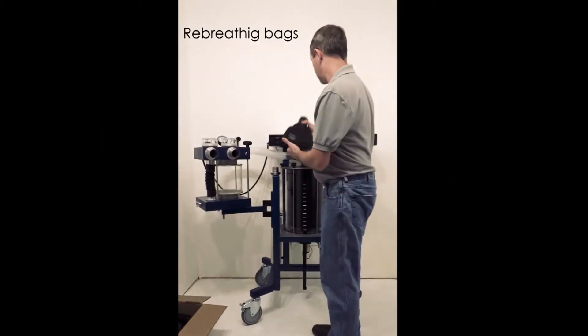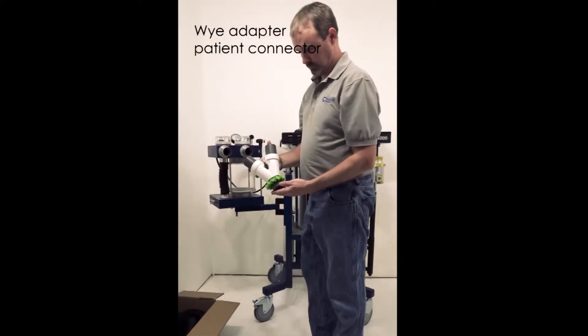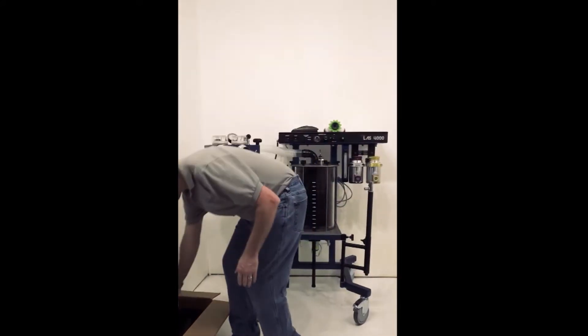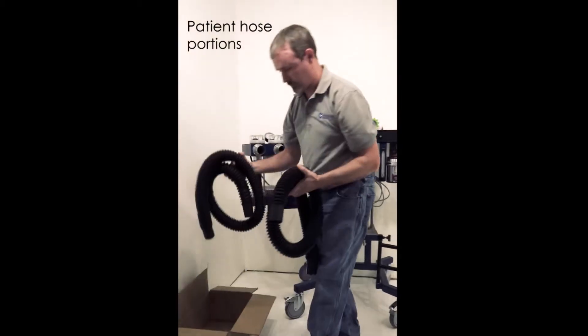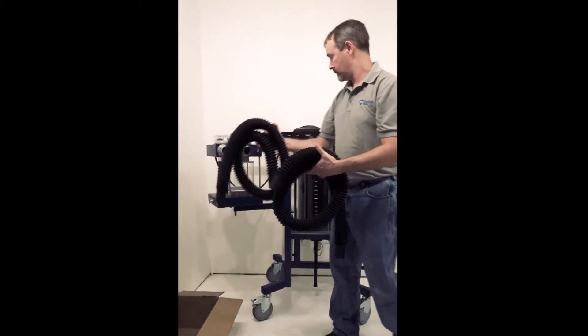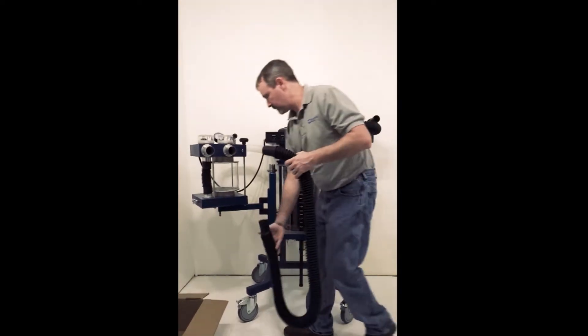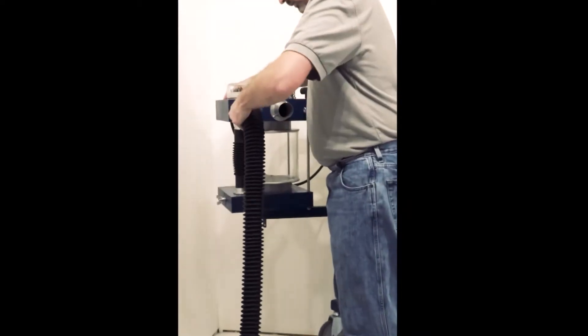Next, you'll find in the accessories kit rebreathing bags of several sizes, the Y adapter patient connector, and patient hose portions for the left and right limb of the breathing circuit. Firmly attach one hose to the inspiratory and expiratory ports attached to the CO2 housing.